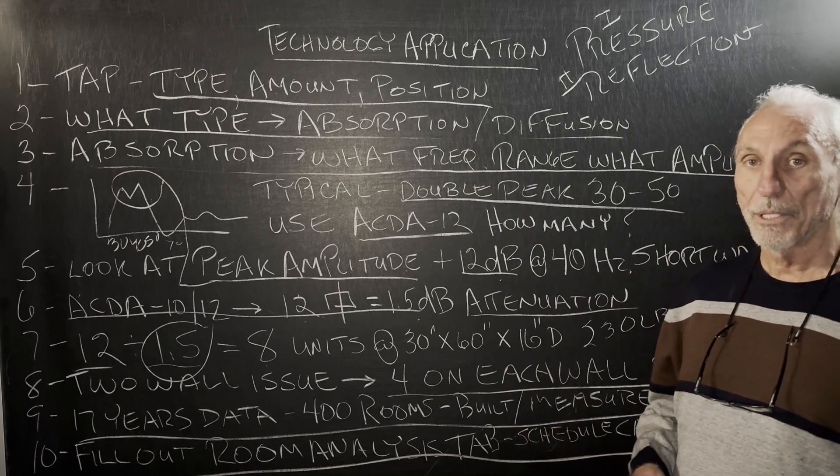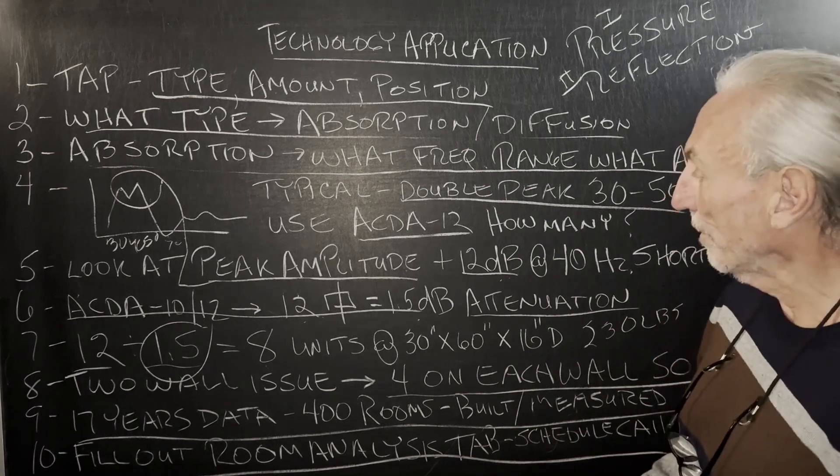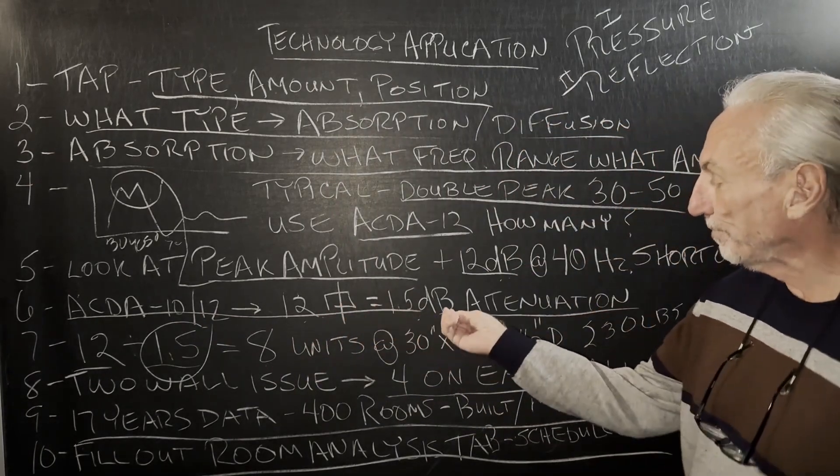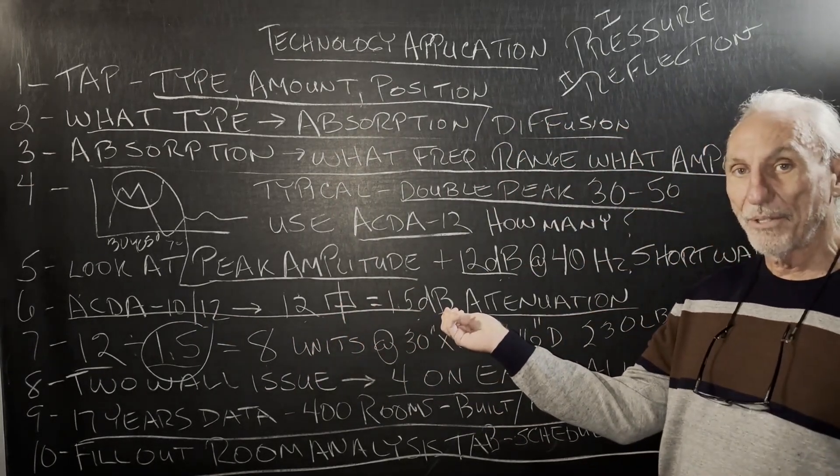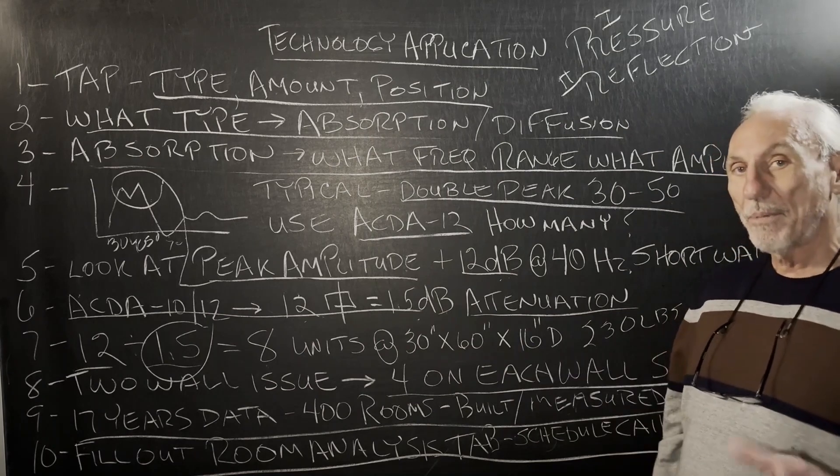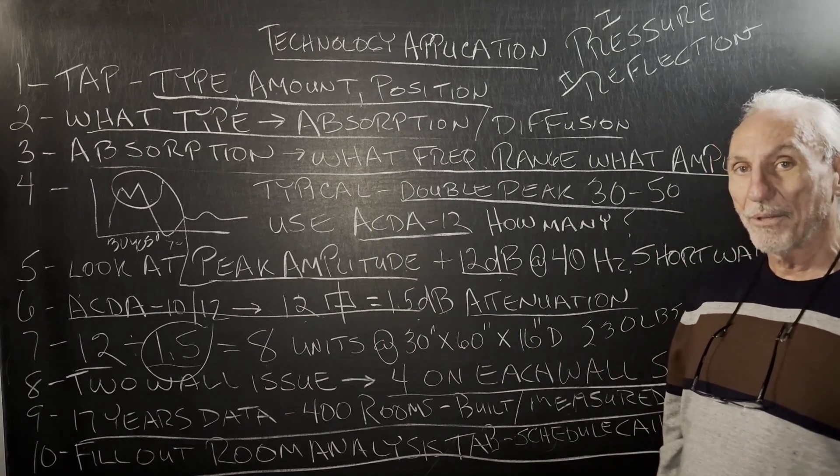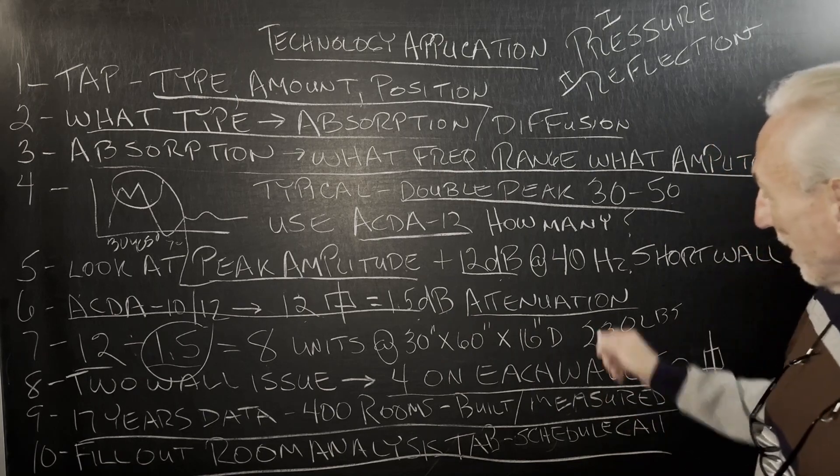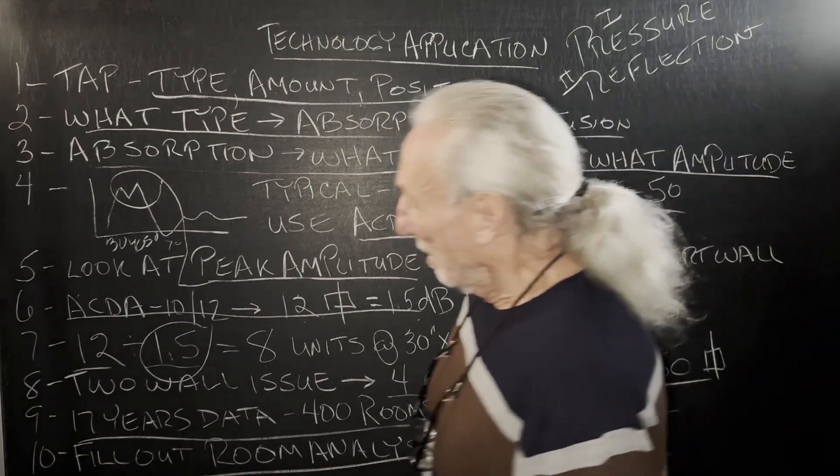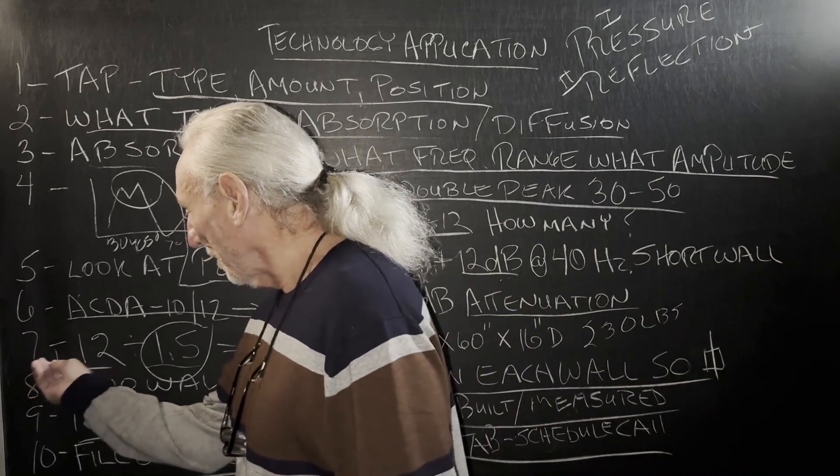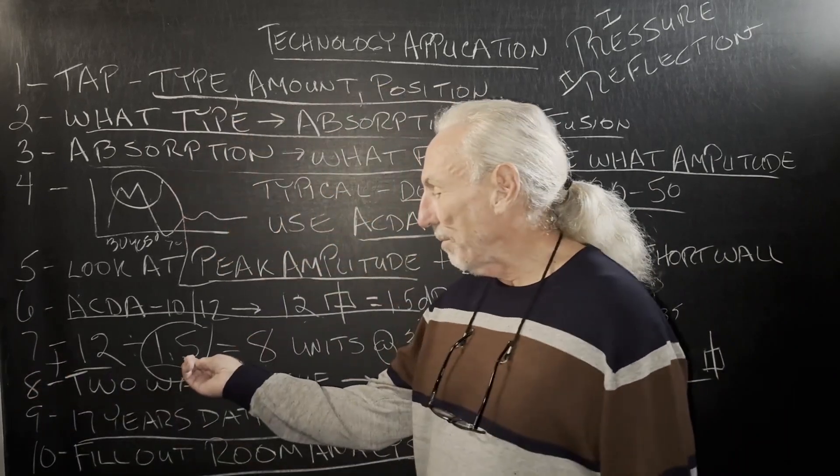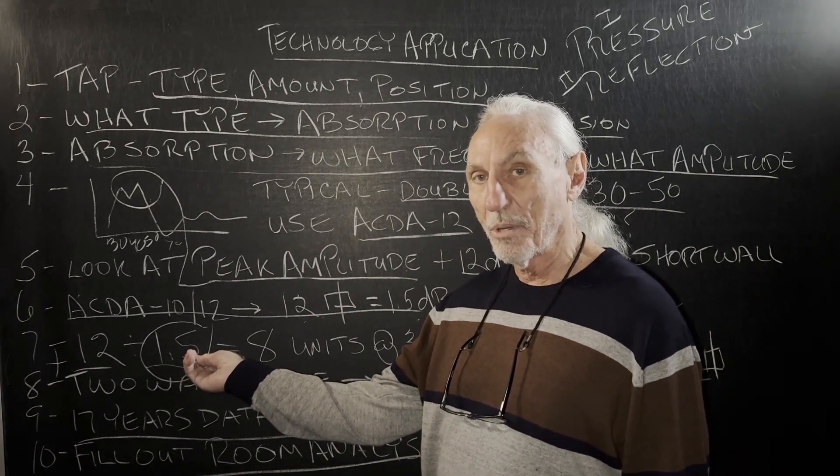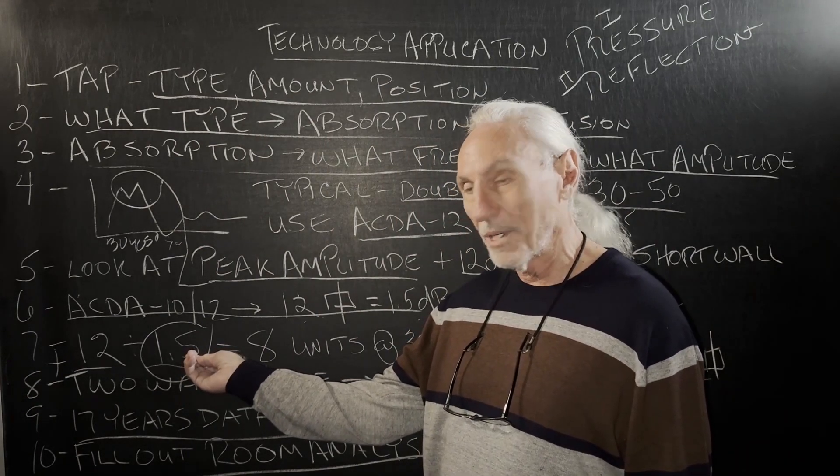So let's figure out the type. Well, all of our low frequency absorption is diaphragmatic. So that's what we're going to use. So we know our ACDA 12 series is 12 square feet. And whether it's the 10 or the 12, it attenuates about 1.5 dB in that 30 to 50 cycle range for the 12s. So that's our attenuation. So let's take our plus 12 dB peak and divide it by 1.5 dB because that's about the amount of energy each 12 square feet or each unit absorbs.